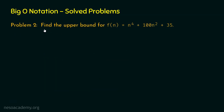Problem number 2 says: find the upper bound for f(n) equal to n⁴ + 100n² + 35. Again, I want you to solve this problem on your own — please pause the video and try. Let's solve this problem using the same 3-step method. Step number 1 is to find the dominant term. Clearly, it is n⁴, because n⁴ is greater than 100n² and also greater than 35.